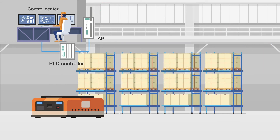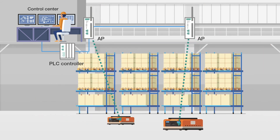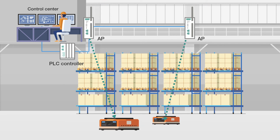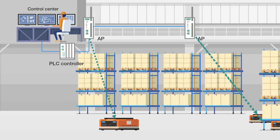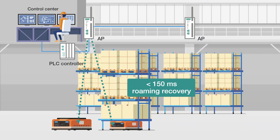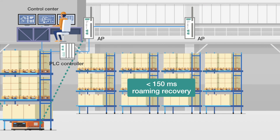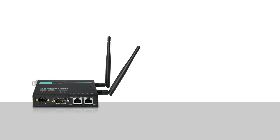To ensure a reliable connection between the control room and the PLC when AGVs move around the factory, milliseconds handover roaming between access points is a must.